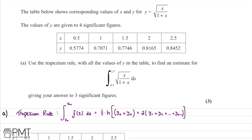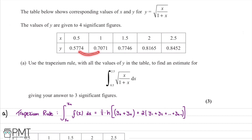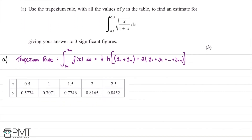In this question, we're told that the table below shows corresponding values of x and y for the equation y = √(x/(1+x)). The values of y are given to four significant figures. We're asked to use the trapezium rule with all the values of y given in the table to find an estimate for the integral from 0.5 to 2.5 of √(x/(1+x)) with respect to x, giving our answer to three significant figures.